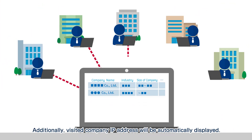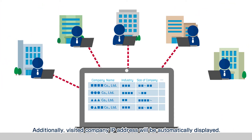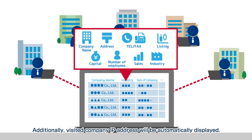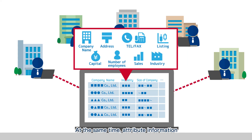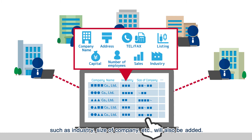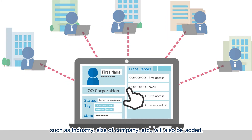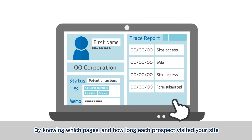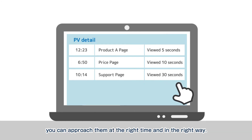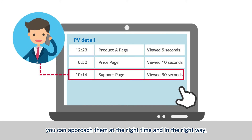Additionally, visited company IP addresses will be automatically displayed. At the same time, attribute information such as industry, size of company, etc. will also be added. By knowing which pages and how long each prospect visited your site, you can approach them at the right time and in the right way.